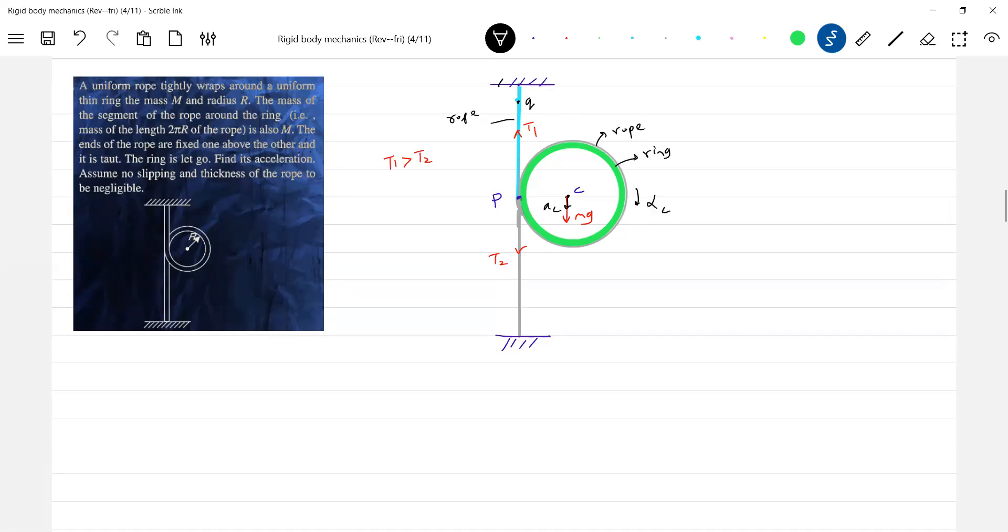I'm thinking like this. Let's see what I can get. So Mg minus T1 minus T2, let it be T, the difference in tension. 2Mg. It should be 2Mg. Mass of the rope, mass of the ring. So 2Mg minus 2Mac.